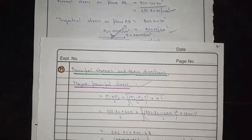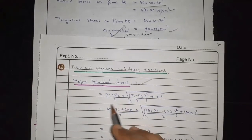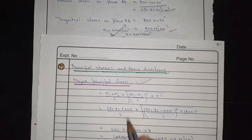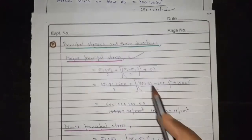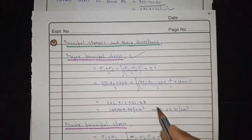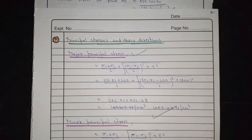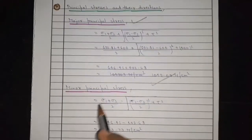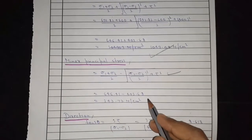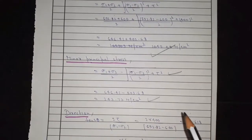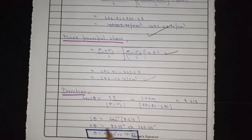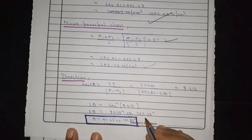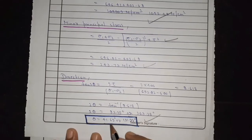We will use three formulae to easily solve the second part. First, the major principal stress formula — we know all values and put them in to get the answer. Then the minor principal stress formula — we put values in and the answer is obtained. For direction, we get two theta values.